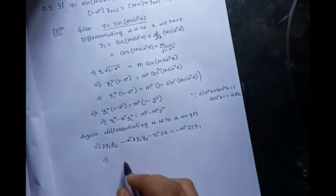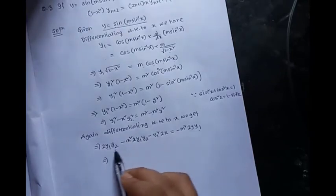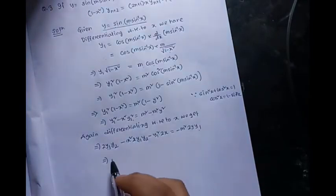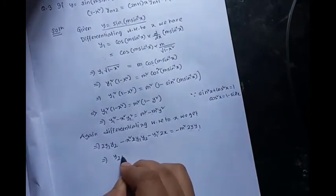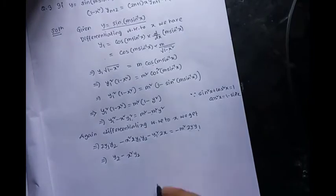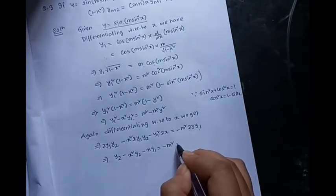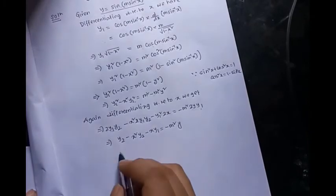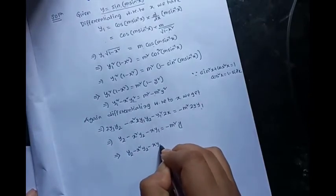Dividing through by twice y₁ and cancelling common terms, we get y₂ times (1 minus x squared) minus x·y₁ plus m squared·y equals zero. So the equation is y₂ minus x squared·y₂ minus x·y₁ plus m squared·y equal to zero.